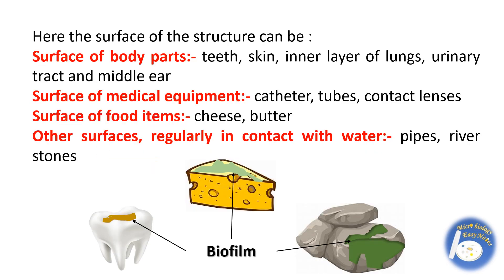The surface of the structure can be the surface of body parts like teeth, skin, inner layer of lungs, urinary tract, and middle layer. It can be the surface of medical equipment like catheter, tubes, and contact lenses. It can be the surface of food items like cheese and butter, or other surfaces regularly in contact with water like pipes and river stones.